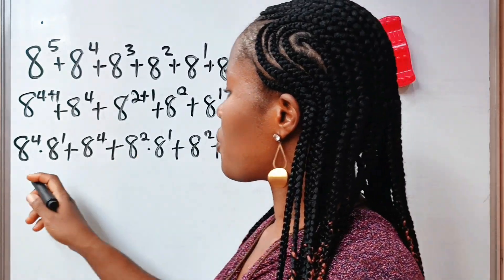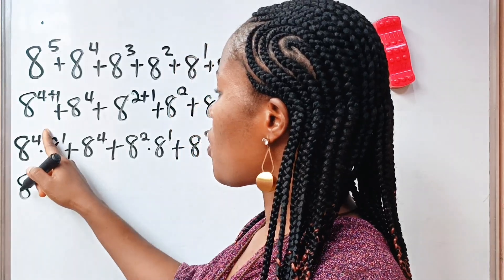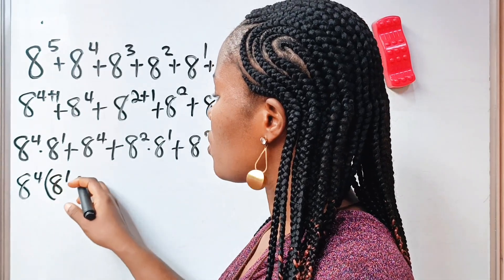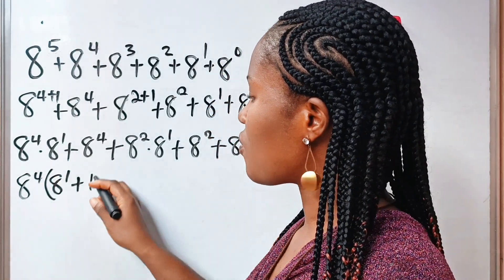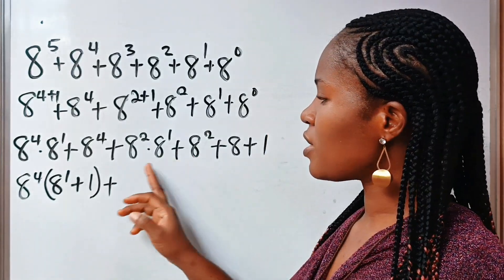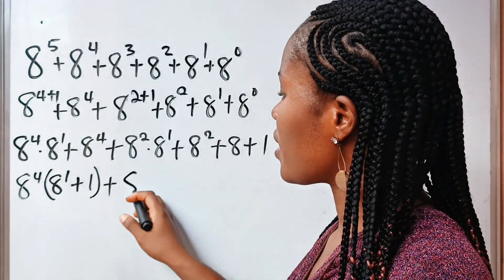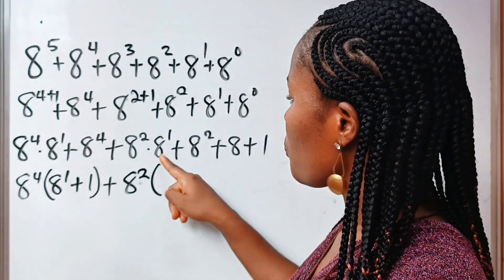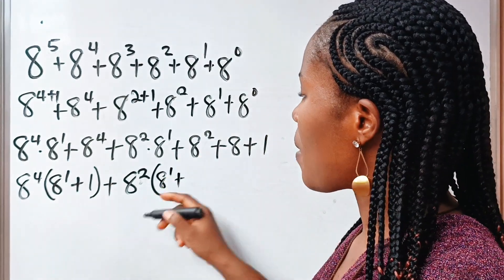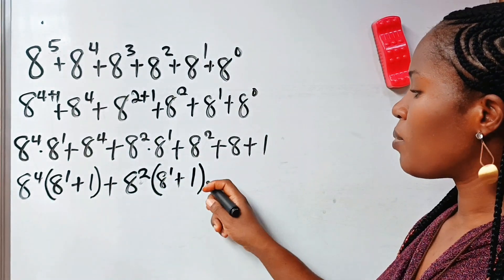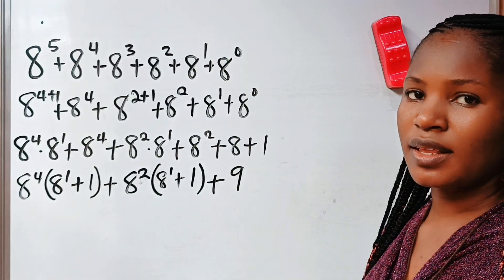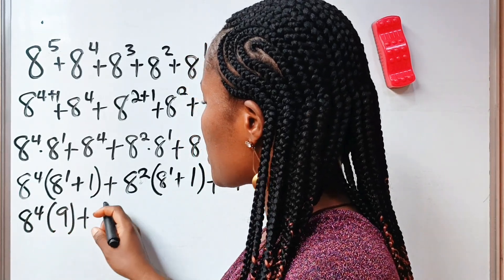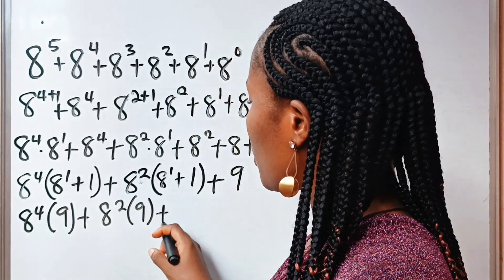So, we factorize that out — we bring out 8 to the power of 4. Now, 8 to the power of 4 multiplied by 8 to the power of 1, divided by 8 to the power of 4, gives us 8 to the power of 1. Plus, 8 to the power of 4 divided by itself gives us 1. Plus, now we have 8 to the power of 2 as a common factor, so we write 8 to the power of 2. When this is divided by 8 to the power of 2, 8 to the power of 1 remains. Plus, when this is divided by itself, 1 is the answer. Plus, 8 plus 1 gives us 9. Now, let's factorize further: we have 8 to the power of 4, bracket 9, plus 8 to the power of 2, bracket 9, plus 9.